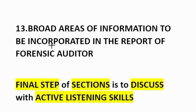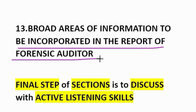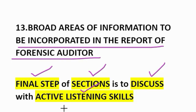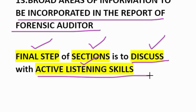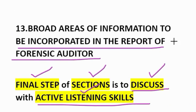Thirteenth question: broad areas of information to be incorporated in the report of forensic auditor. How to remember? Final step of sections is to discuss with active listening skills. Final step — issuing an audit report is the final step of fraud audit. Sections — the report may include sections on the nature of assignment, scope of investigation, approach utilized, limitations of scope, and findings and/or opinions. Discuss — the report will also discuss how the fraudsters set up the fraud scheme and which controls if any were circumvented. Active listening skills — the forensic auditor should have active listening skills which will enable him to summarize the facts in the report. You can get this question from July 2021 attempt suggested answers.